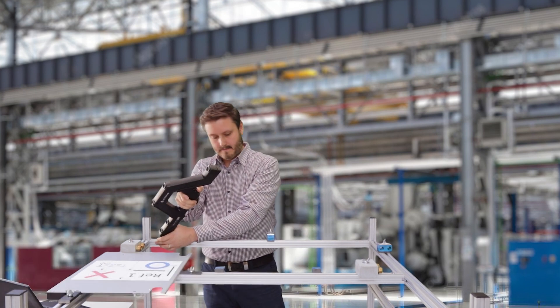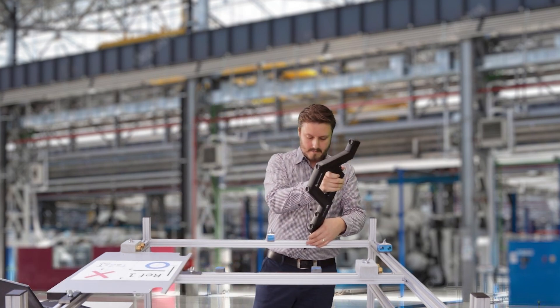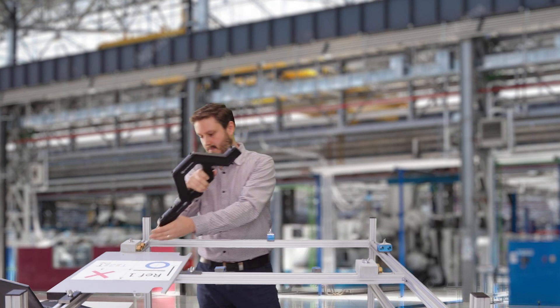The Metronor light pen is tracked continuously by the Metronor cameras and allows the user to move freely around the measurement object.